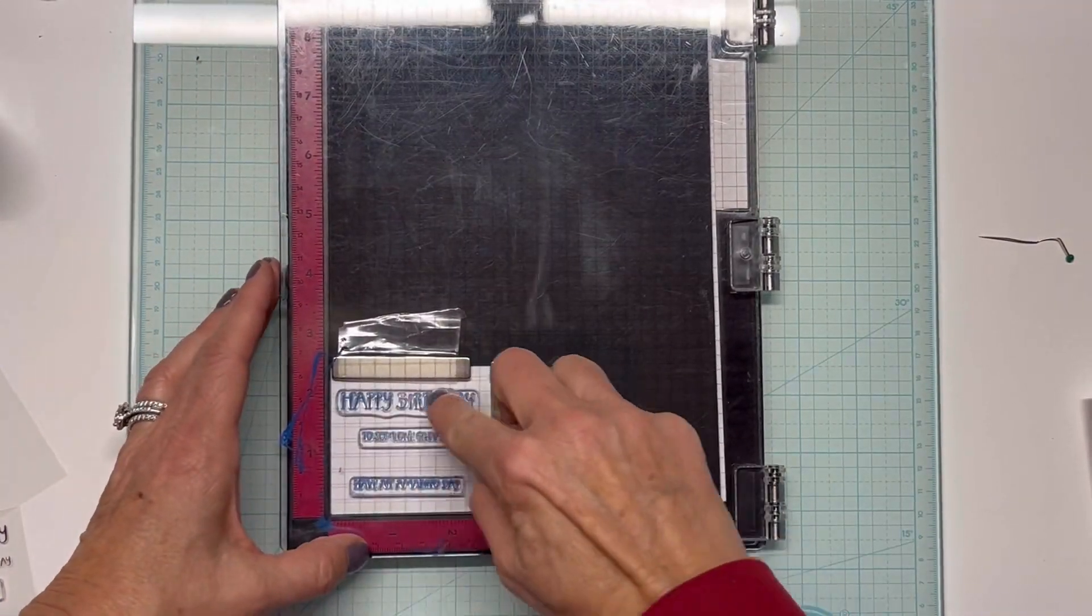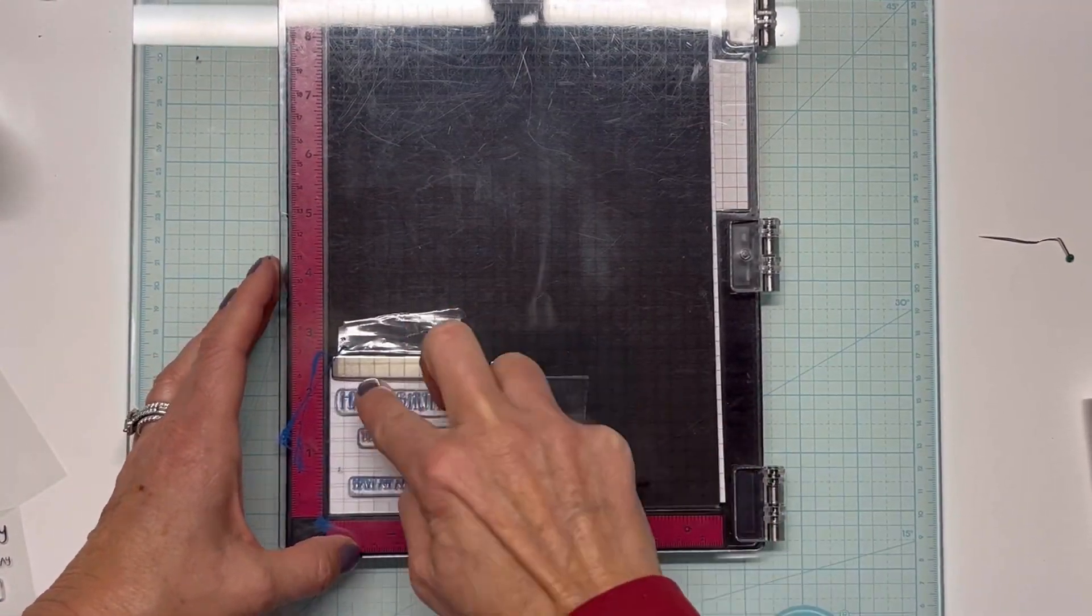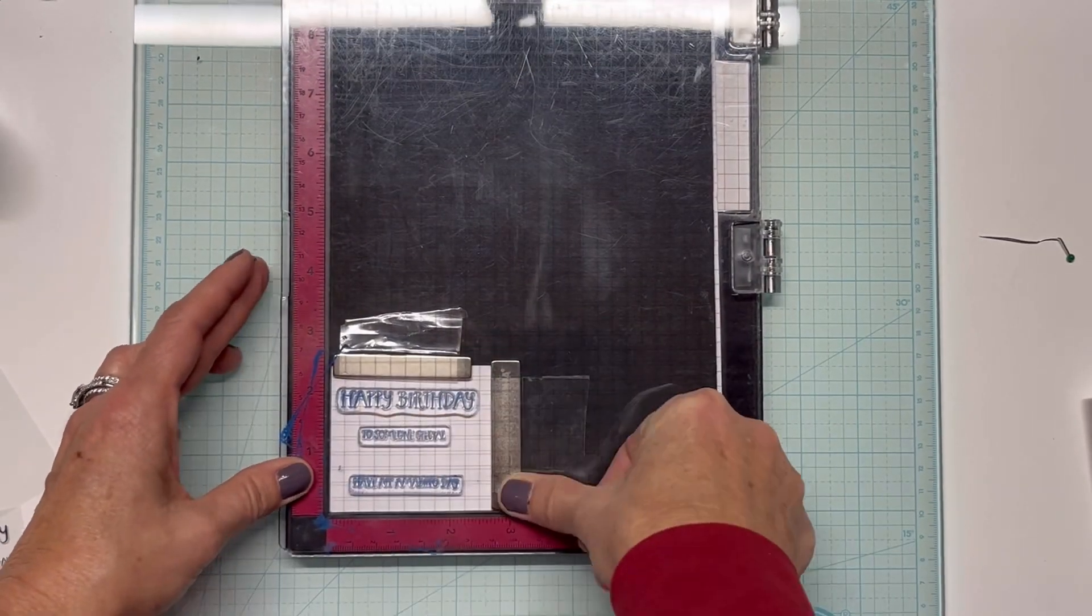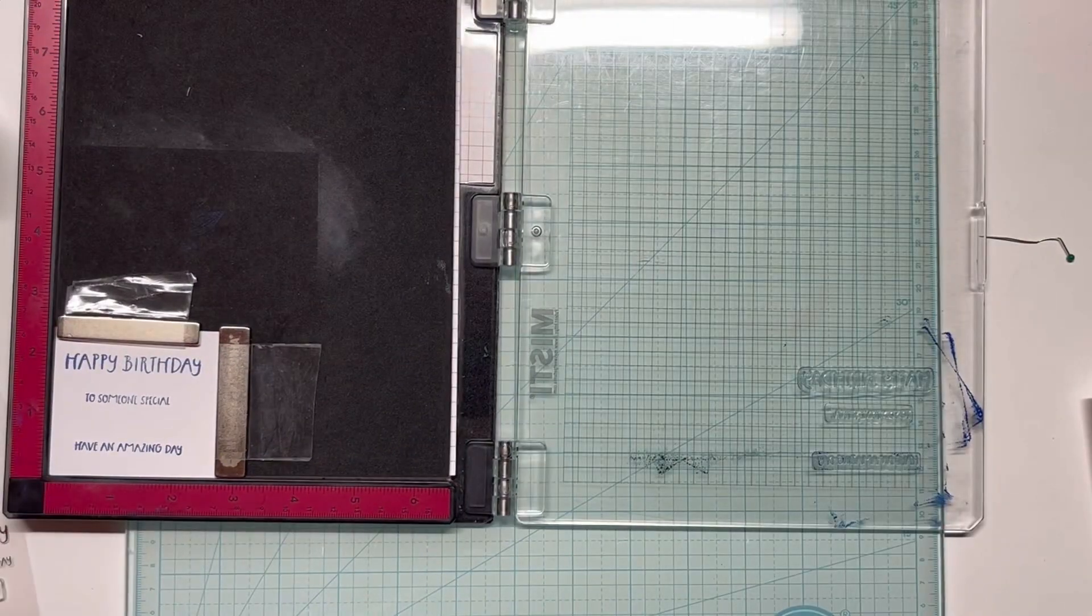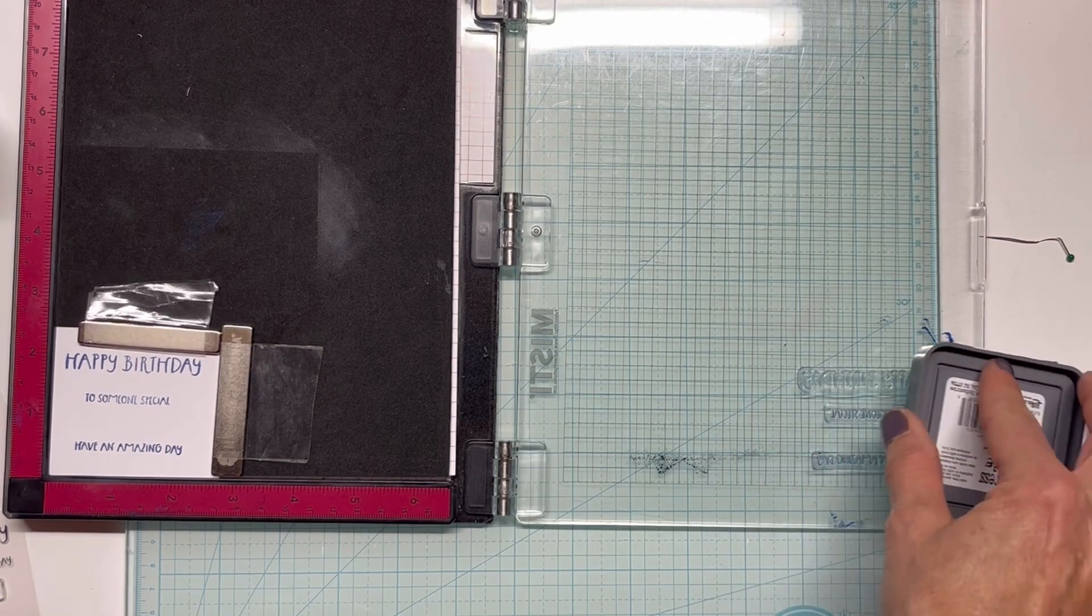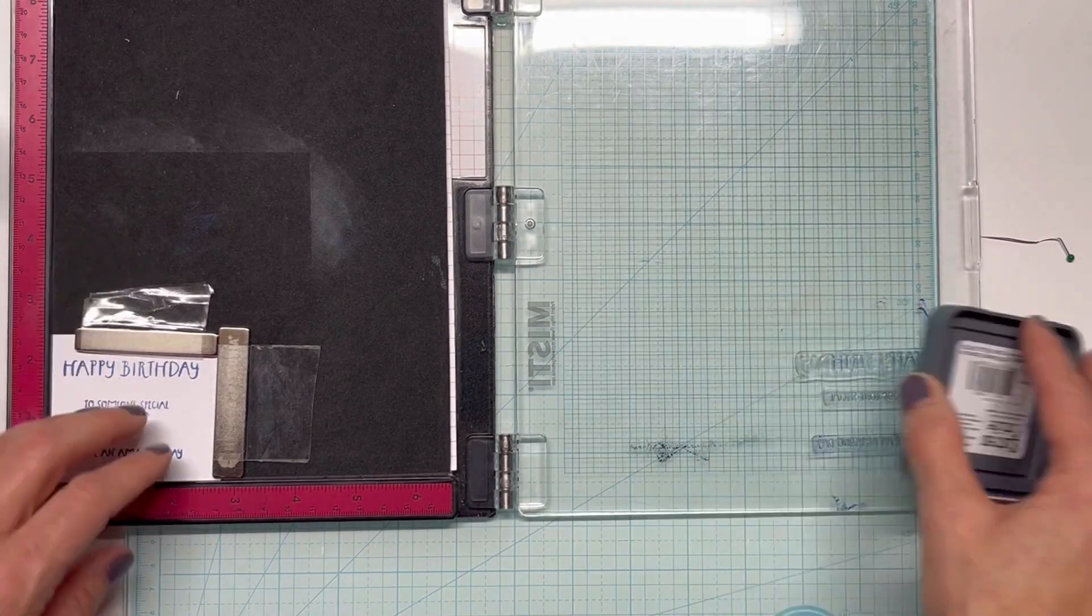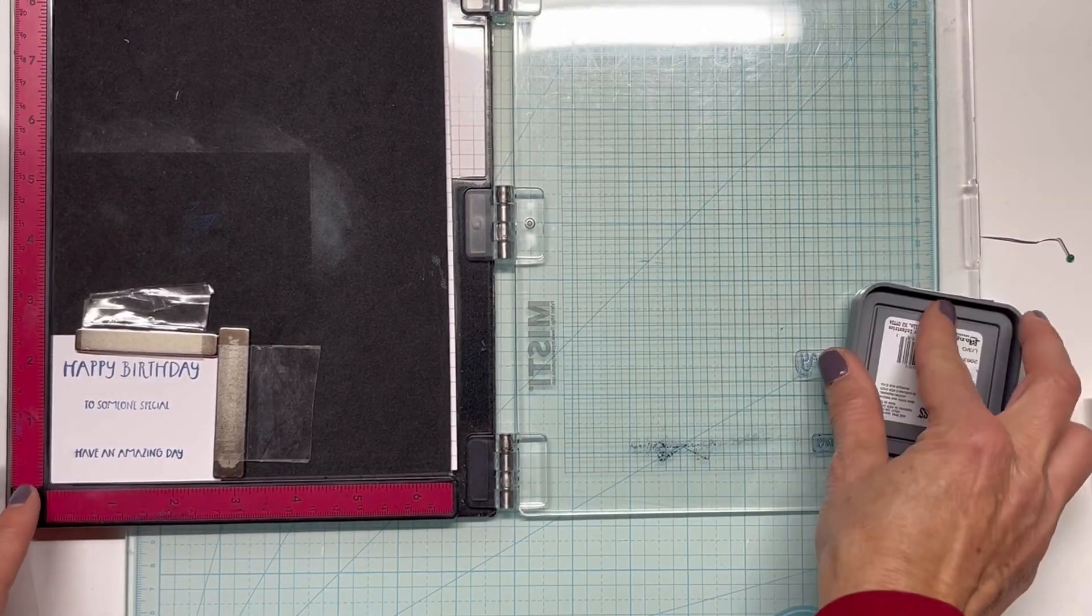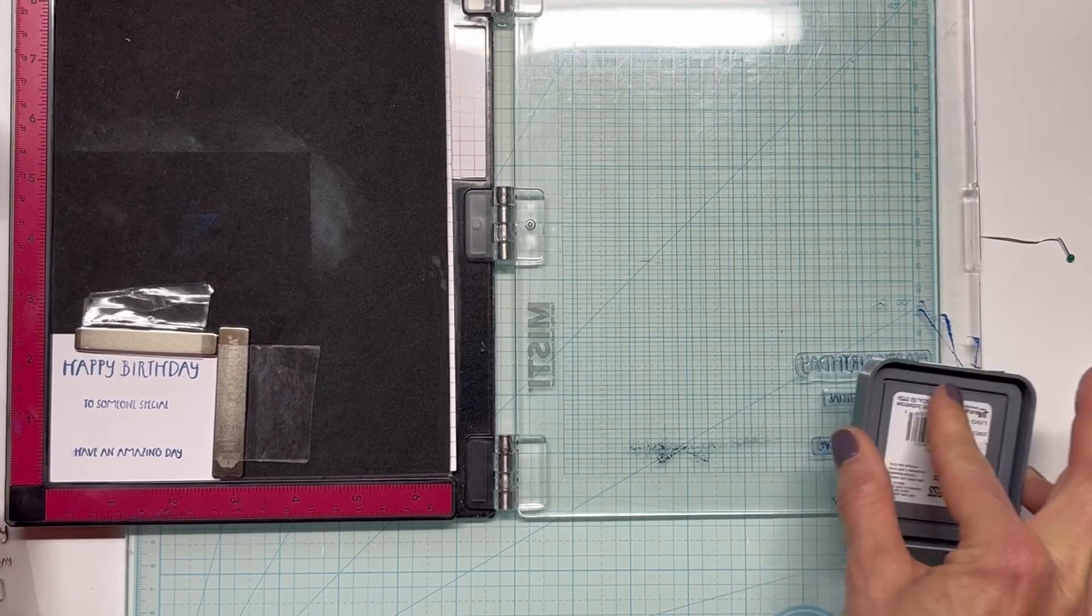I forgot to condition them and I just started stamping, so it's going to take a minute to get these stamped up nicely. Then they should be fine going forward as far as stamping. With these real fine sentiments you want to just lightly ink them up and try to press pretty gently.